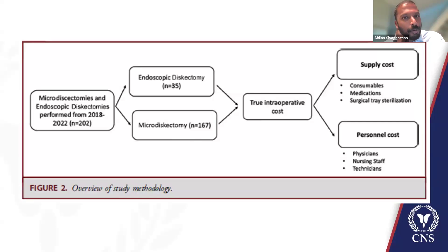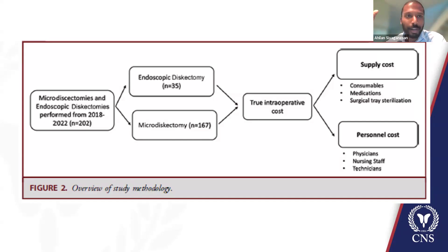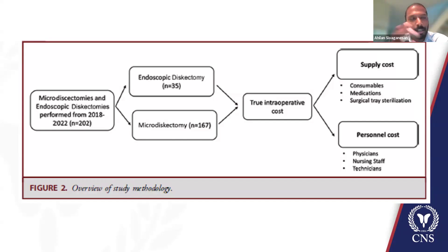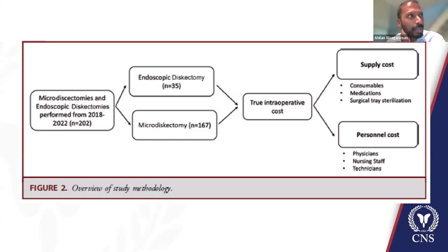If you were to rank-order the dollars-per-minute costs of all the resources for a case, the surgeon is way up at the top and everyone else is crowded much lower, including material resources.